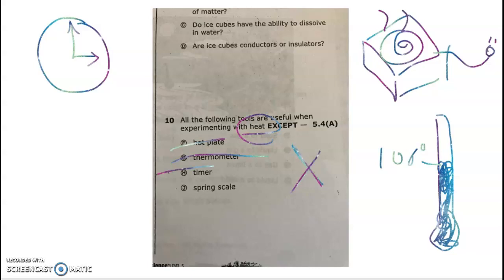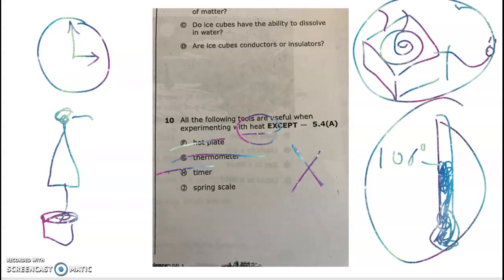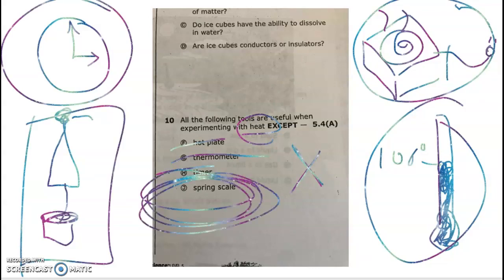A spring scale, however, is a scale that you hold by hand. You allow whatever you attach to it to hang down—let's say it's a bucket—and it tells us the measurement for that. So a spring scale is not going to be helpful because I'm not measuring how hot it is, I'm not trying to apply heat, I'm not measuring temperature, and I'm not trying to time it either. So spring scale is my odd man out—that's my answer.